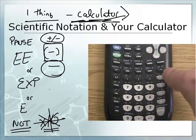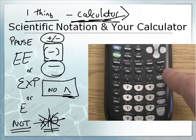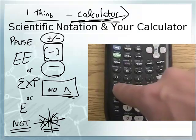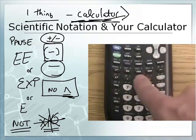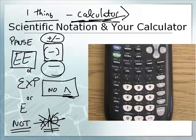So don't do that for a negative exponent. You use the negative button for a negative exponent. This guy right here. Now, one other thing you don't want to use, stay away from the caret. The caret will not help you with scientific notation. So don't use the caret, don't hit times, don't hit 10 to the X, and don't hit E to the X. You are going to use the EE button.